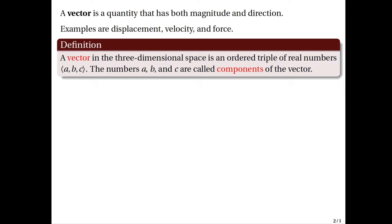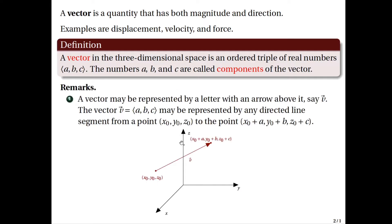Now we can visualize vectors in the three-dimensional space by using a directed line segment. For example, if we have a vector V with components A, B, and C, this will be represented by a directed line segment starting at a point x0, y0, z0 to a terminal point x0 plus A, y0 plus B, z0 plus C. So this vector V has initial point at this point and terminal point at this point. This shows us the length of the vector V as well as its direction.